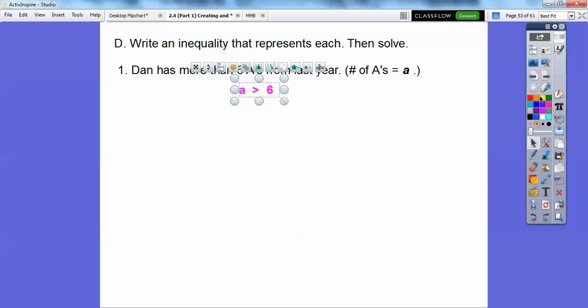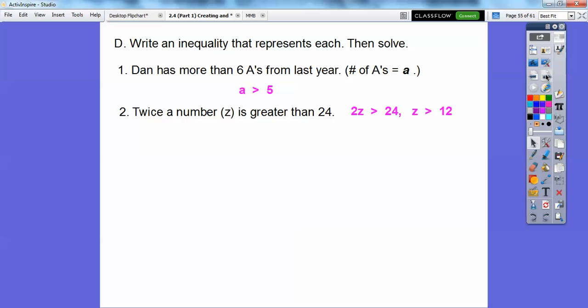So the next one is going to be, twice a number. That's two times. Twice a number Z, so 2Z is greater than 24. So 2Z is greater than 24, and then now when you divide both sides by 2, you get Z is greater than 12 right there. Let's try another one here.